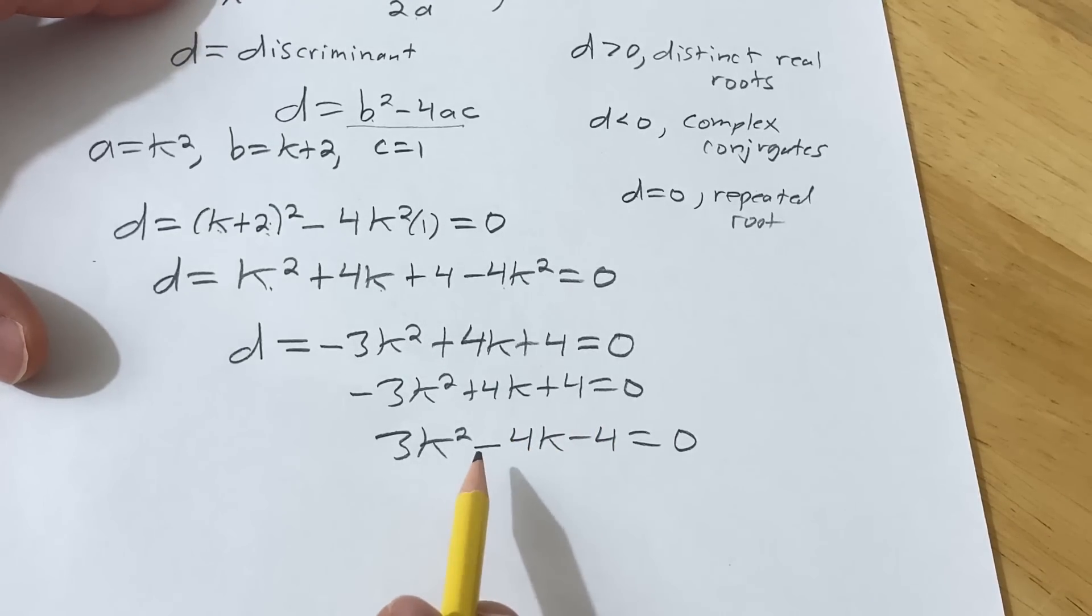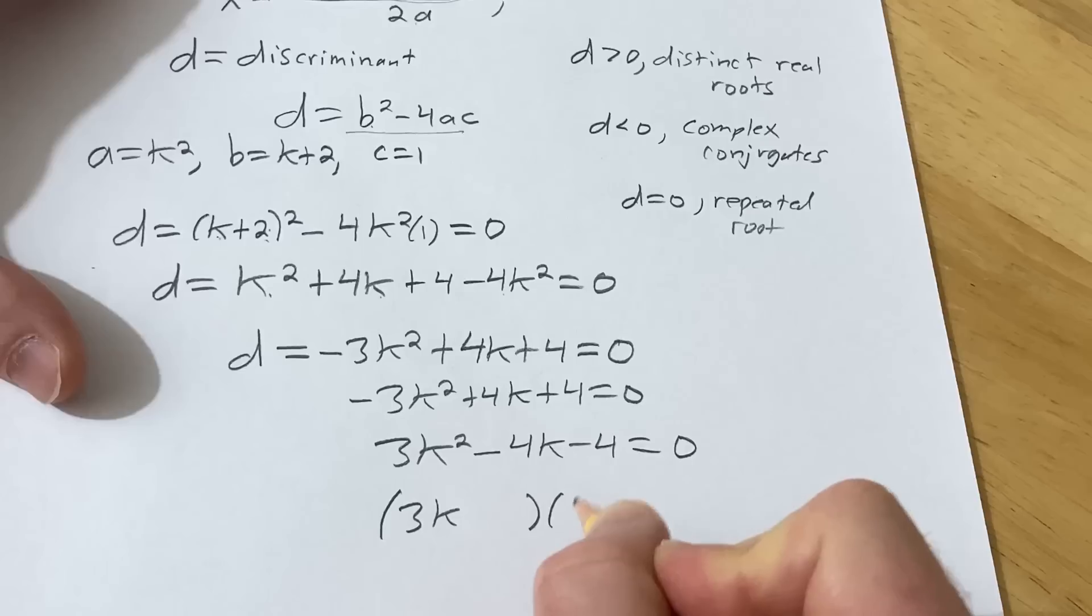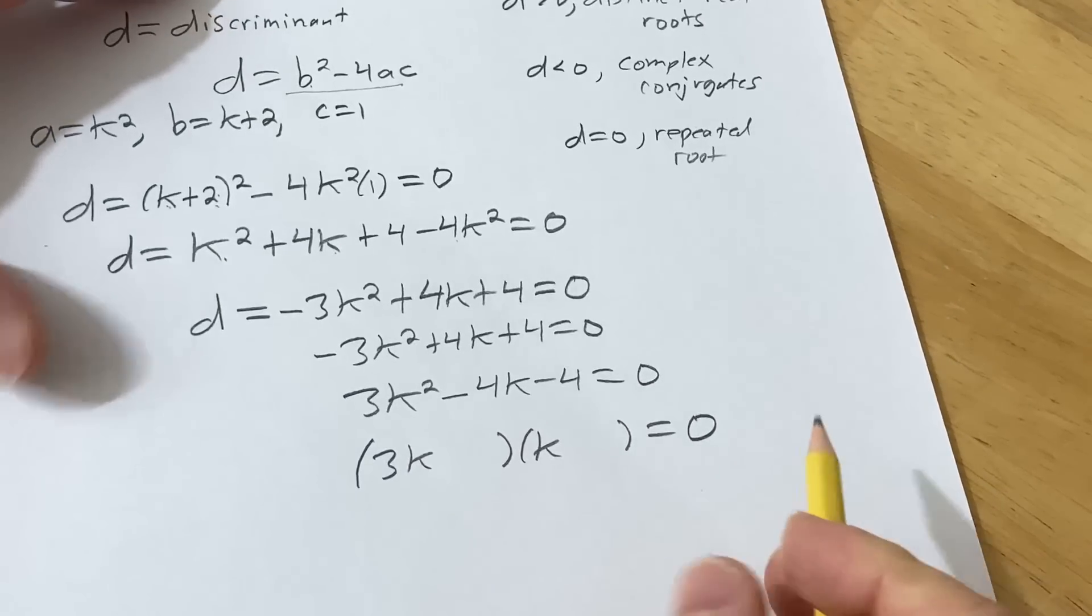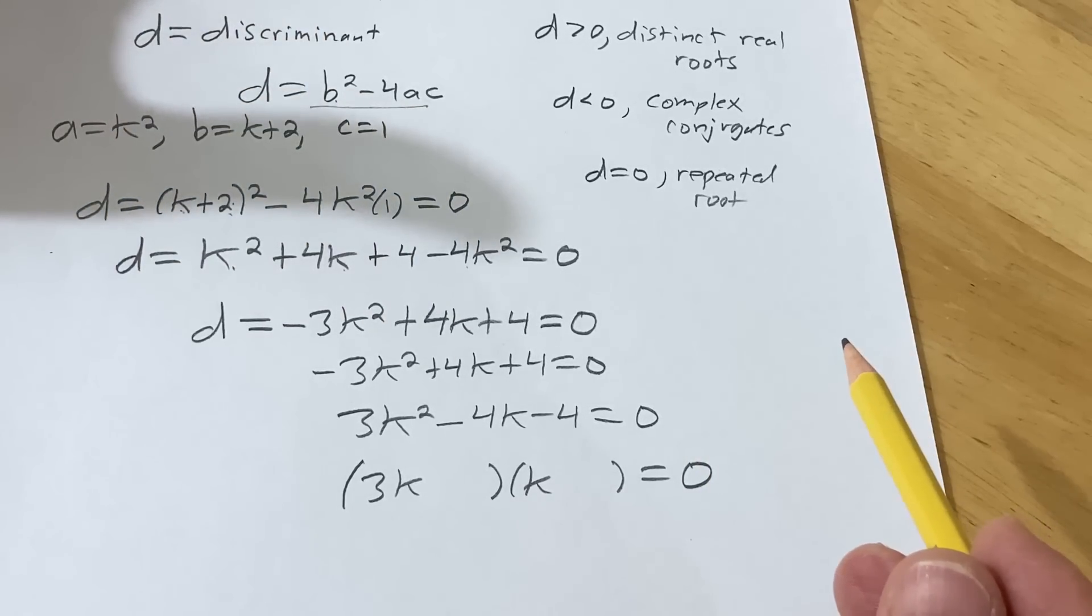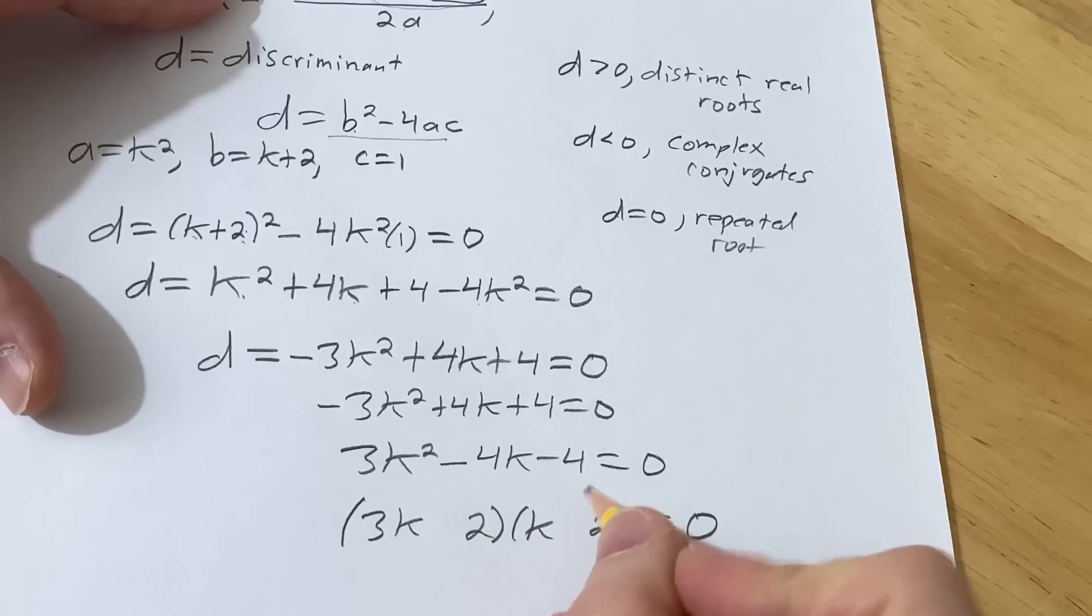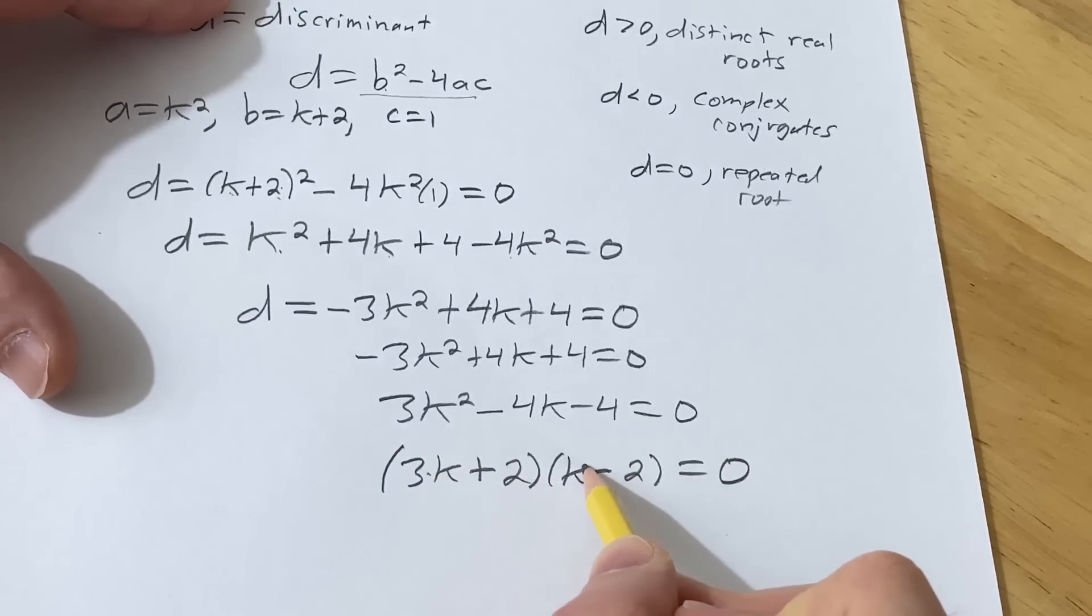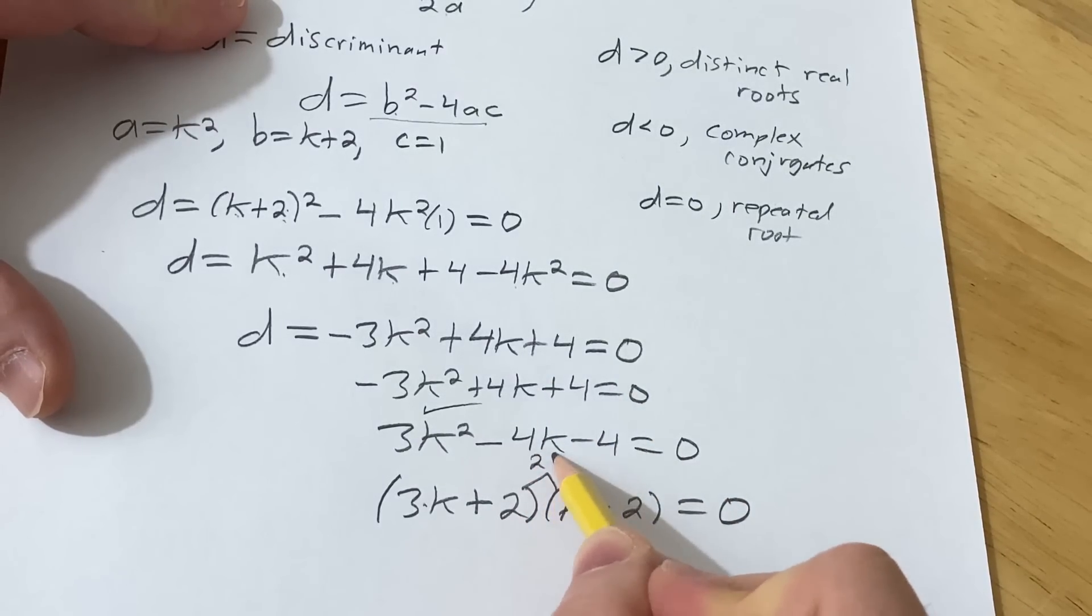Now, I suppose you could use the quadratic equation to solve this for k. But I'm not going to do that. I'm just going to try to factor. And let's just try to guess. There's only so many numbers that multiply to 4. Like nice numbers. 2 times 2 is 4. 1 times 4 is 4. So let's try 2 and 2. And let's make this one negative and this one positive. And I believe that works. Let's check. 3k times k is 3k squared. Check. The inner piece is 2k. The outer piece is negative 6k. When you add them up, you get the middle term, which is negative 4k. Check. And 2 times negative 2 is negative 4.